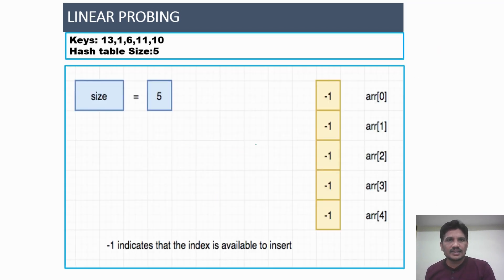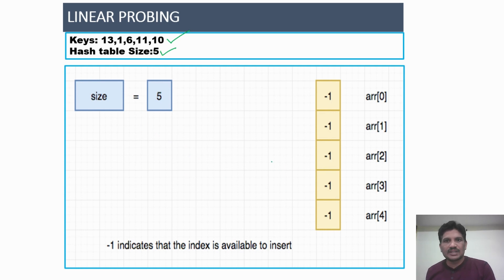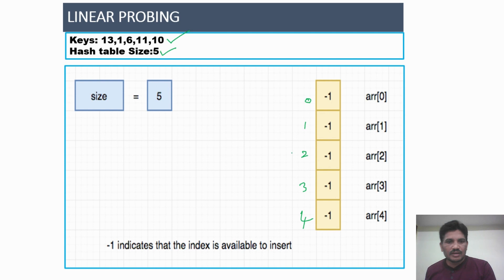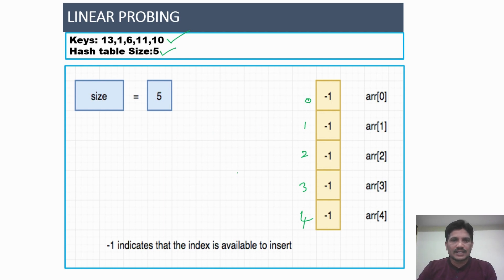The problem: the keys to be stored in the Hash table are 13, 1, 6, 11, and 10. The Hash table size is 5. The array has been initialized with indices 0, 1, 2, 3, and 4 — that is, array[0], array[1], array[2], array[3], array[4]. We will now map these keys to their index locations where the values would be stored; these keys are also called the data.